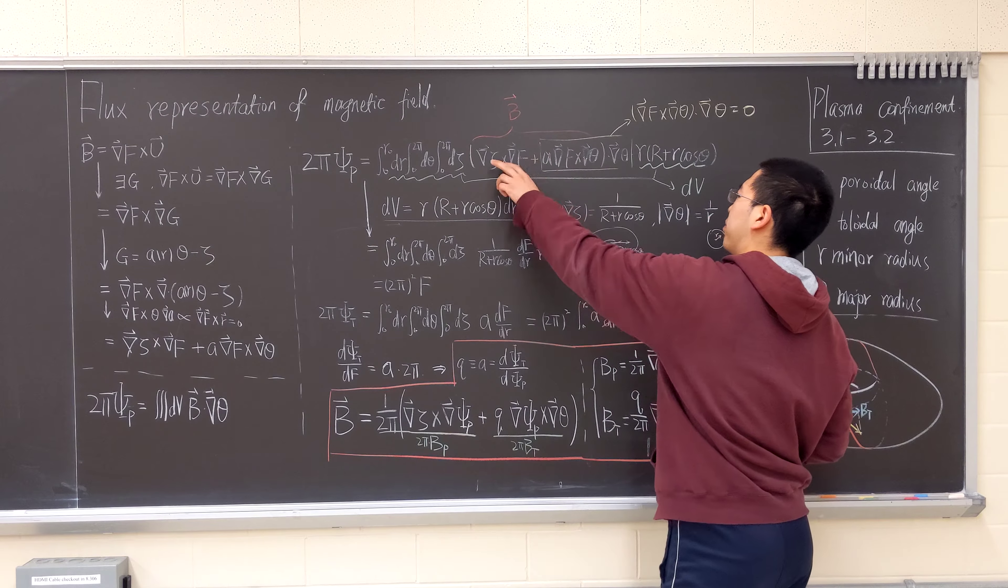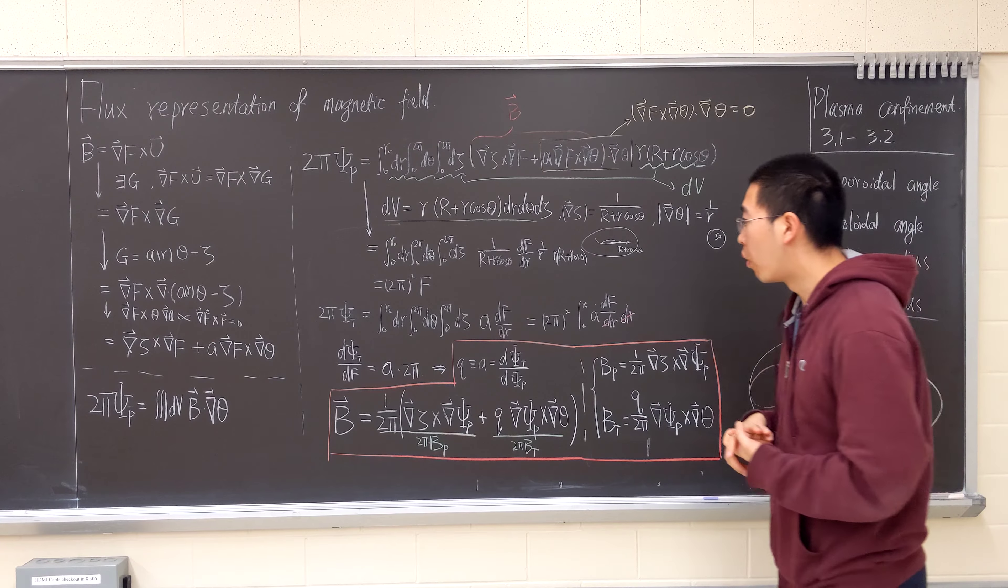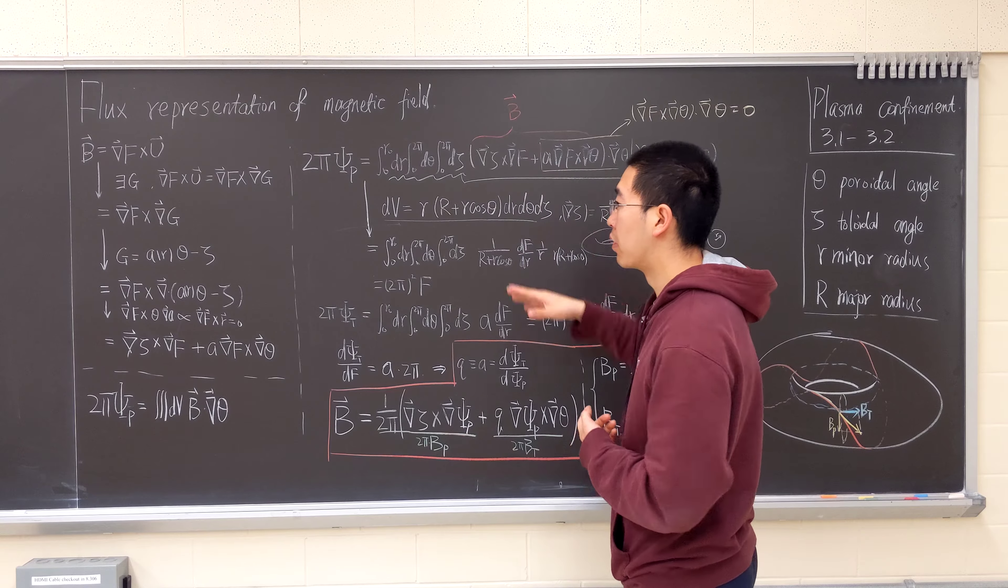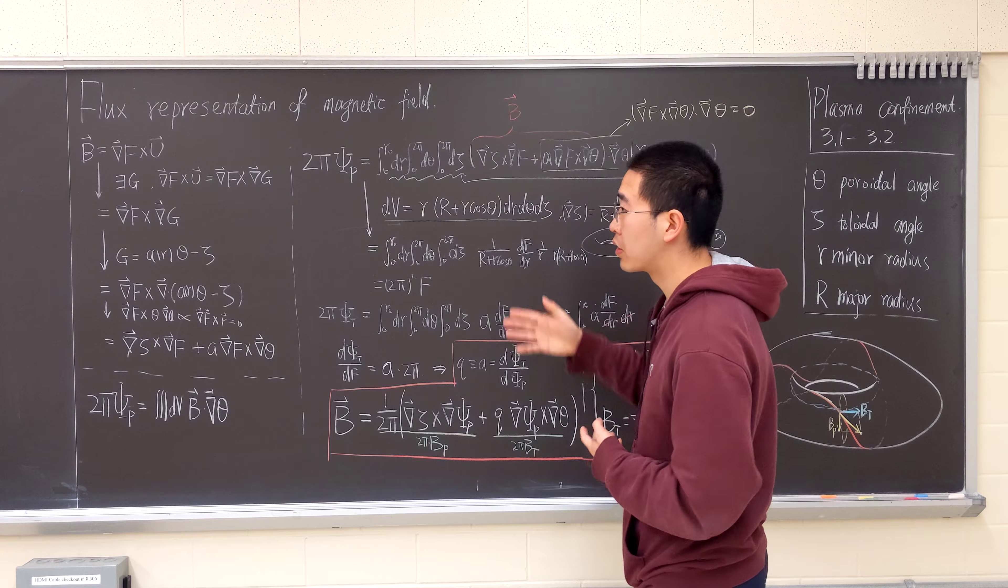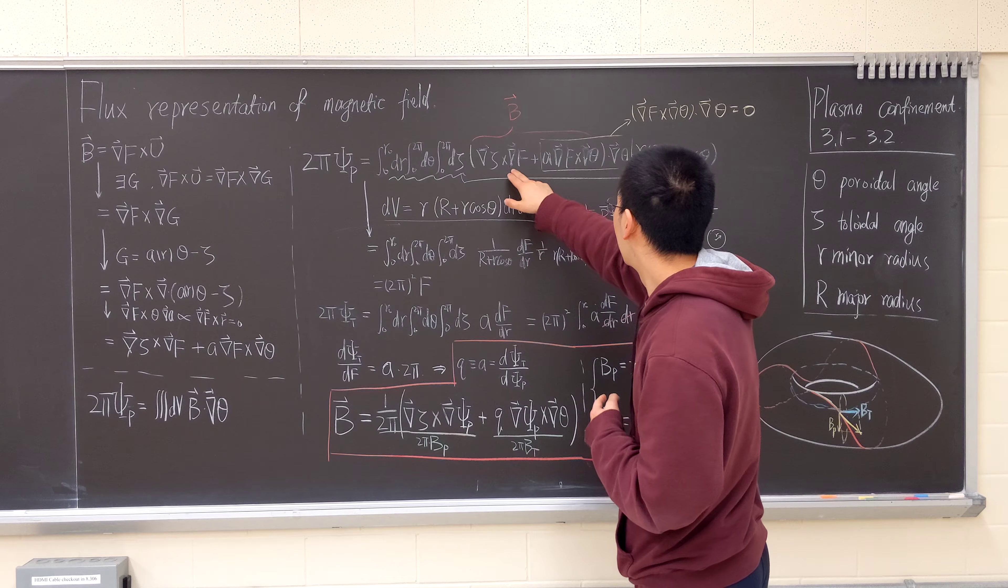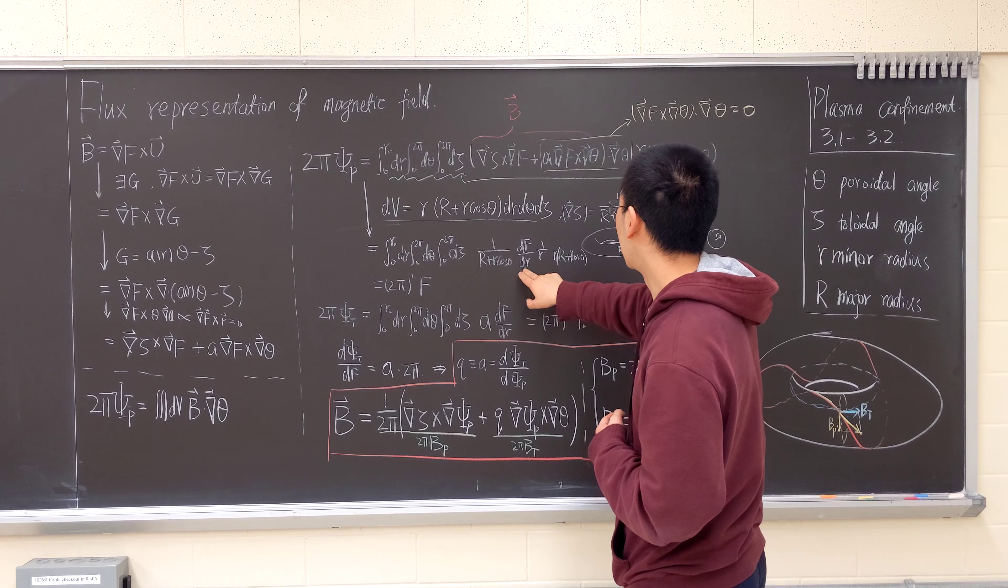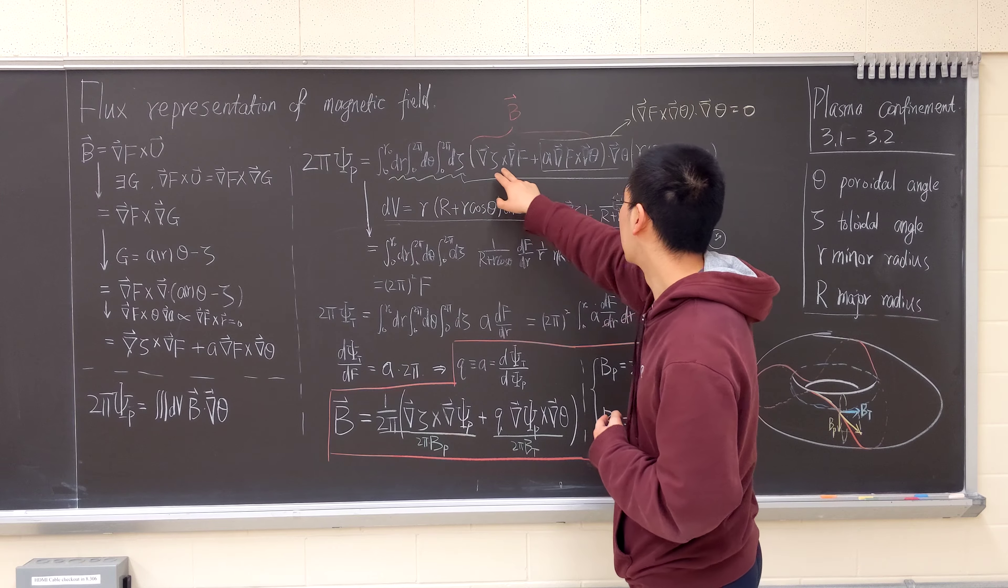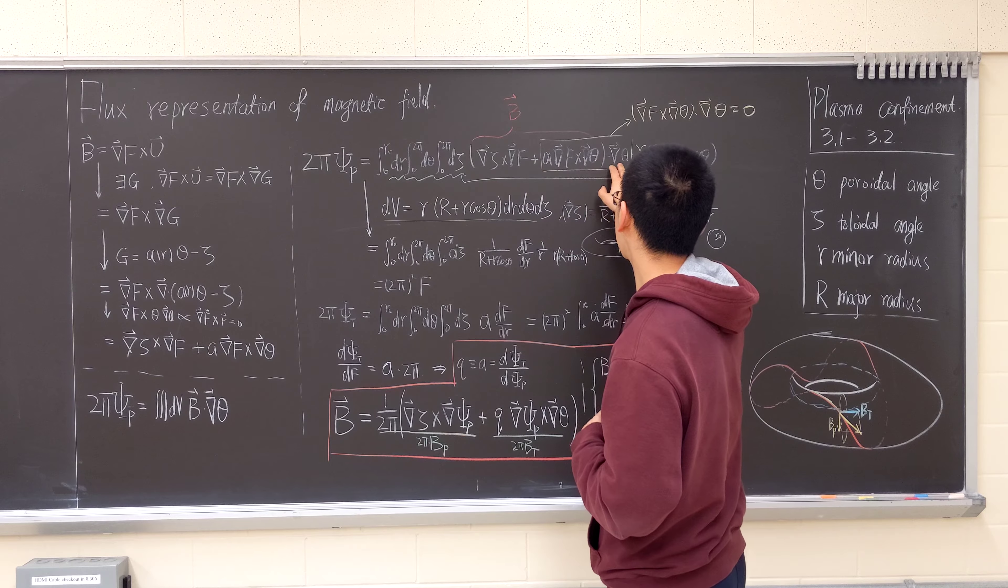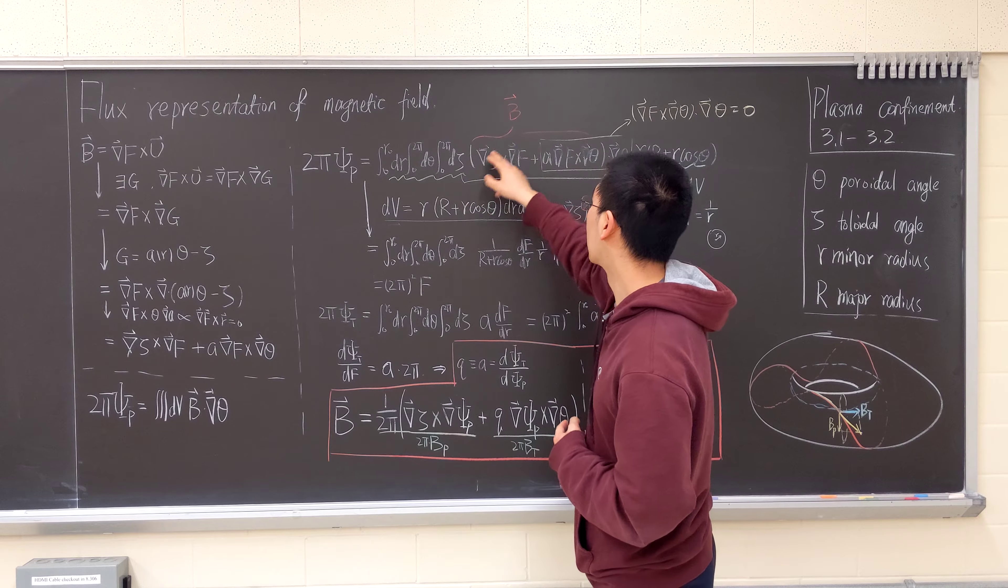It will be one. It will be in the same direction, in the radial direction. So F dR and then this will be cross theta. Theta dot theta, this will be the theta direction. This has to be in the theta direction, this has to be in the R direction.